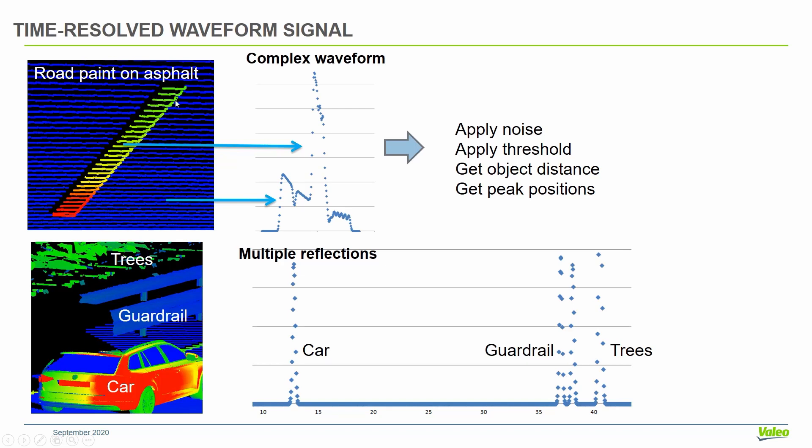So what we do with these pixels is we construct the time-resolved waveform signal. Let's say we have road paint on asphalt. Each of the points will contribute a small Gaussian peak to the overall complex LiDAR waveform signal. X is the time, y is the voltage. Here you can see that the signal from asphalt is decaying with distance, and on top of it we have a relatively sharp peak from the road paint.